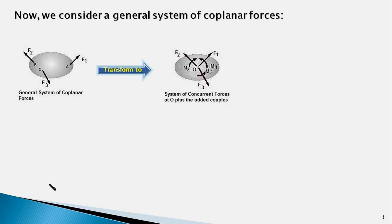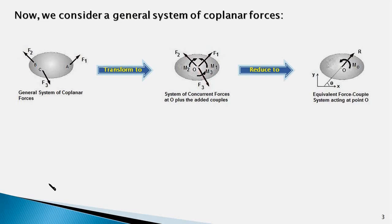The moments M1, M2 and M3 are the moments of the original forces F1, F2 and F3 about point O. Now, these concurrent forces can be added to obtain a resultant force R acting at point O. The vectors of all the moments are along an axis normal to the plane and can be algebraically added to get the net moment MO.